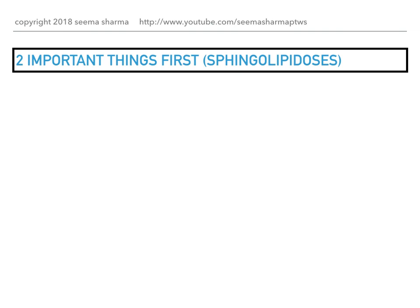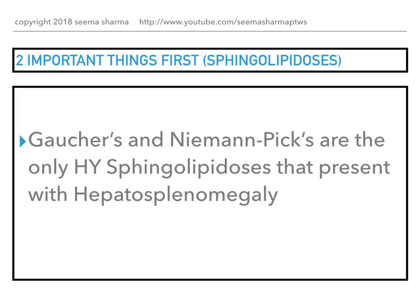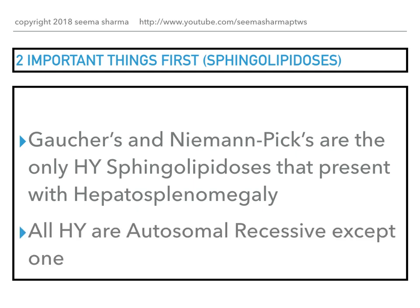Two important things about the high-yield sphingolipidoses. First, Gaucher's and Niemann-Pick's are the only high-yield sphingolipidoses that present with hepatosplenomegaly. Secondly, all high-yield sphingolipidoses are autosomal recessive except for one.